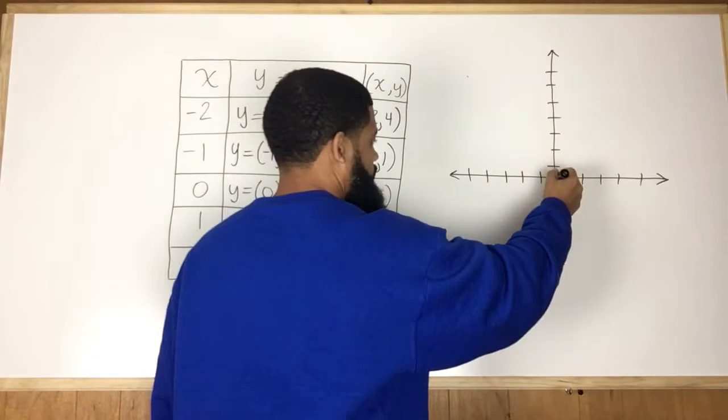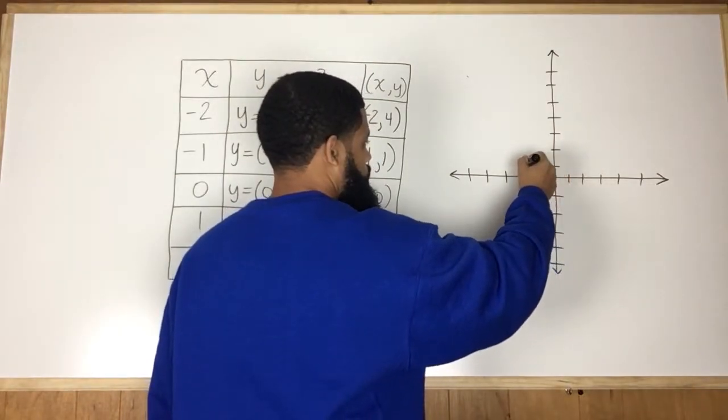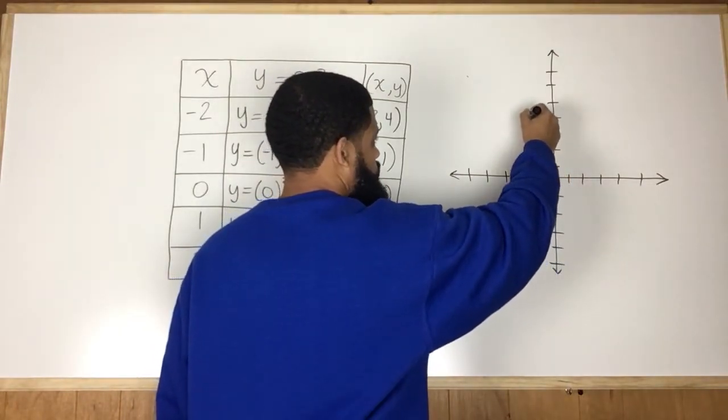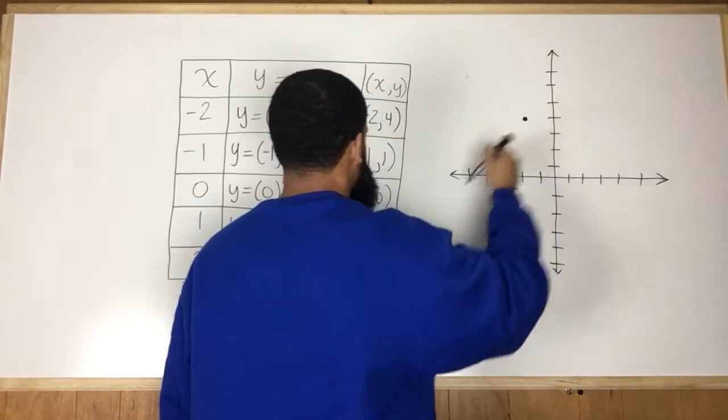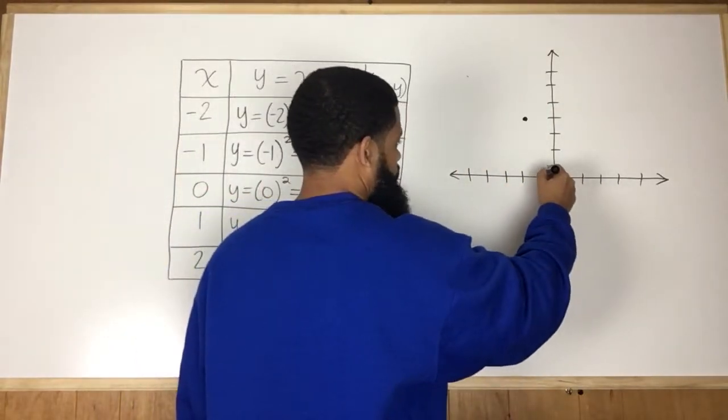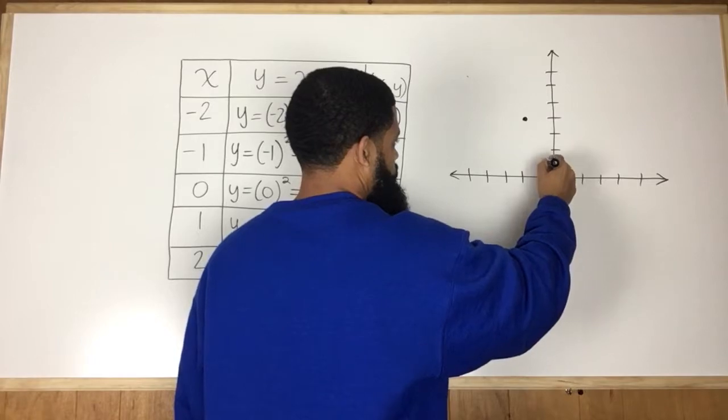negative 2, 4. So if I go here, negative 1, negative 2, 1, 2, 3, 4, boom. Negative 1, 1, OK, so negative 1, 1, boom,